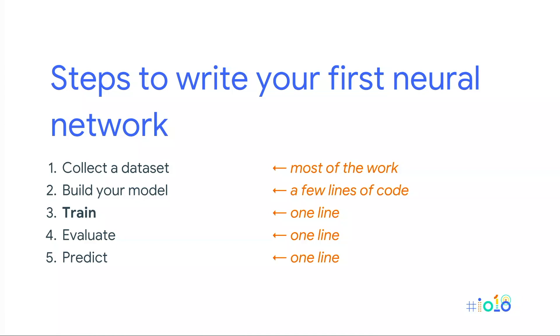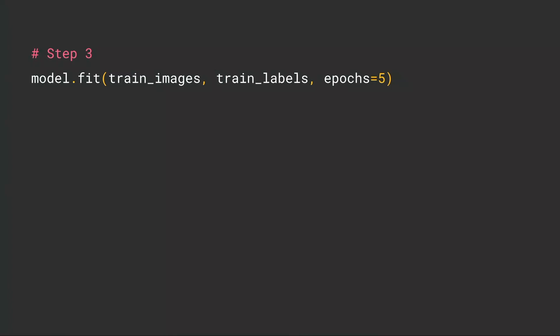Here's the cool part — building your model is where there are many machine learning concepts you have to spend a lot of time learning. The next three steps are literally concepts basically involved with running an experiment, and they're each one line of code. Here's how you train the model — it's one line. Fit is synonymous with train, and we're training it using the training images and the training labels.